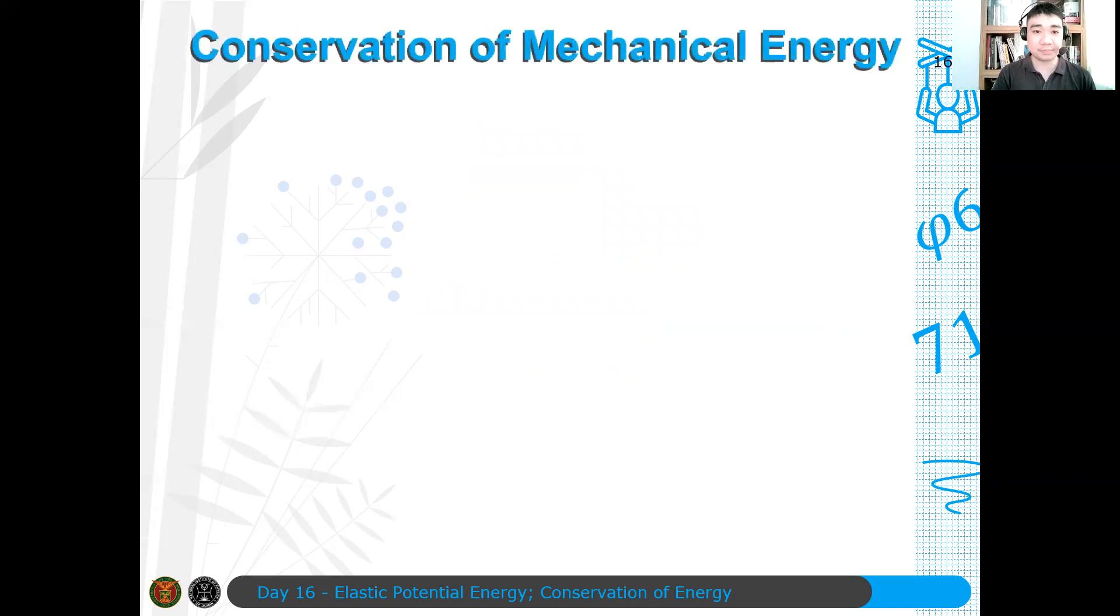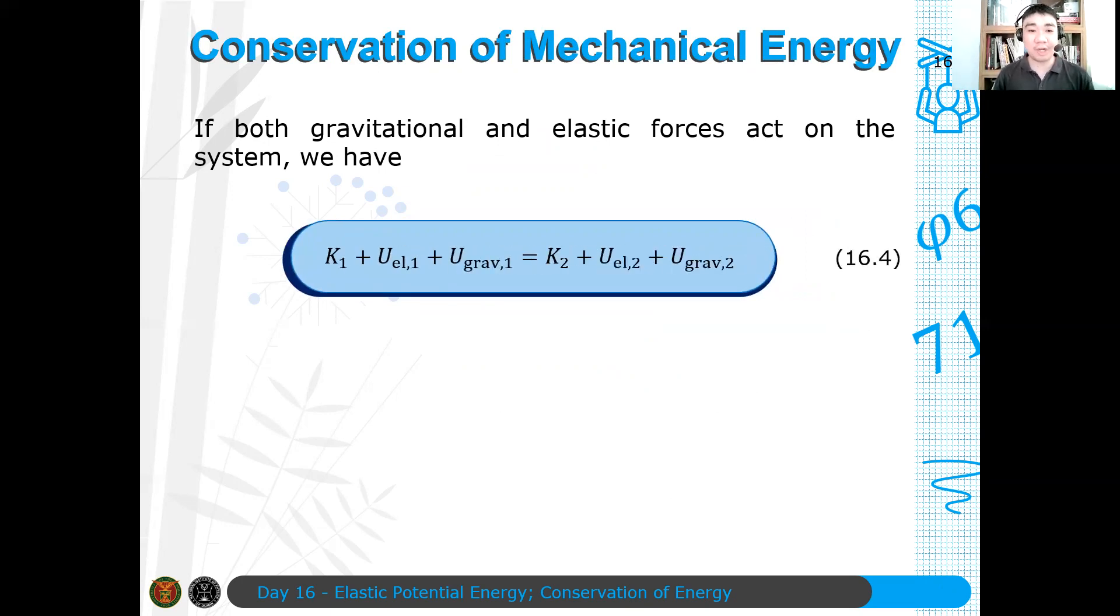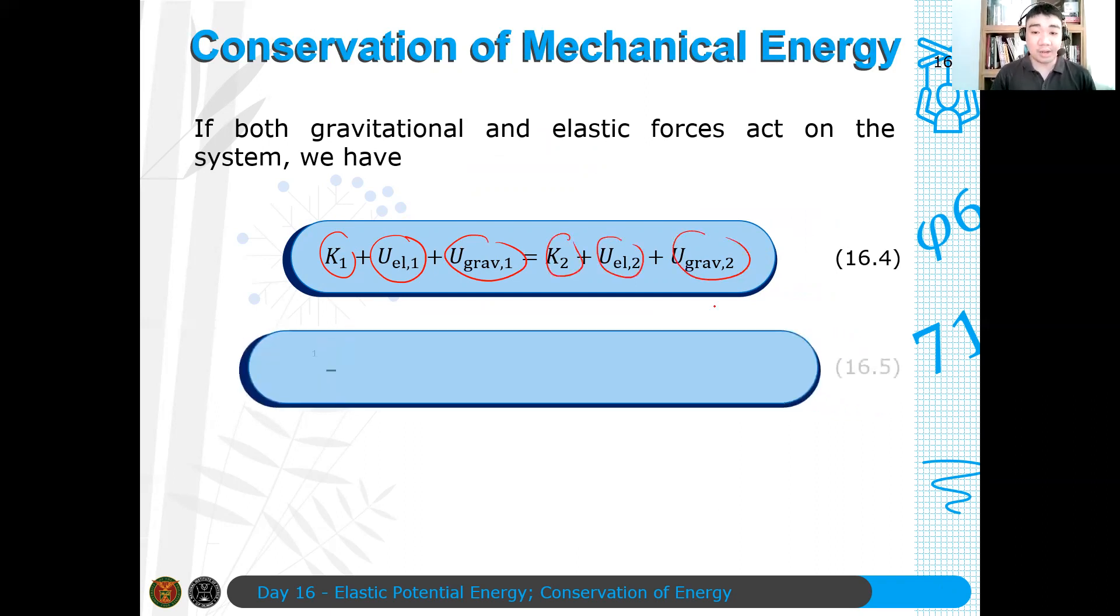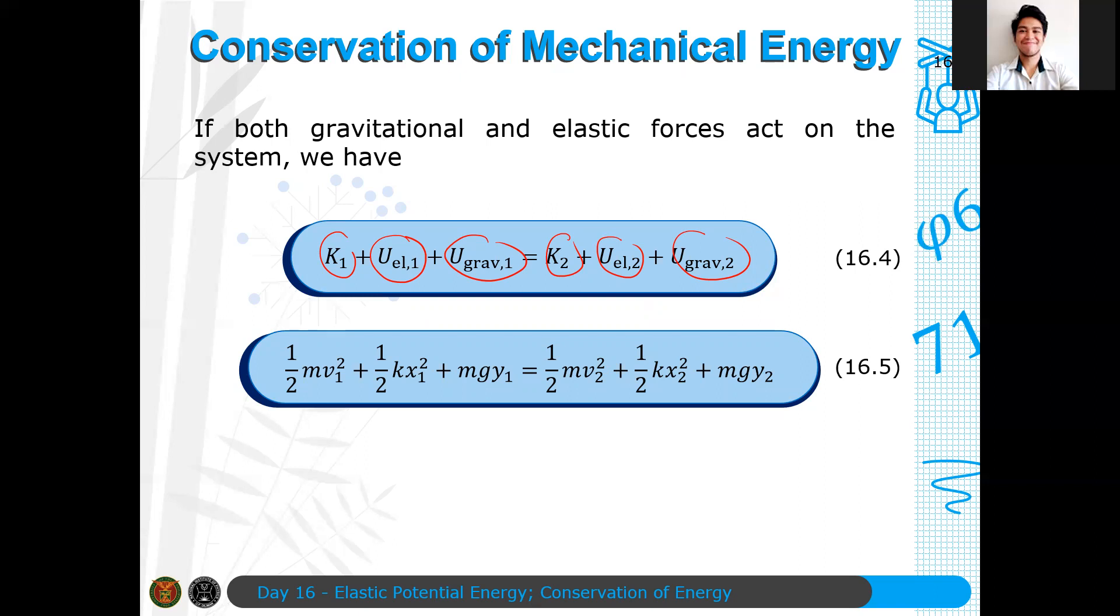If you have both gravitational and elastic forces, magkakaroon ng additional constraints. So, for example, if both gravitational and elastic forces act on the system, we have this relatively long expression. Magkakaroon ka ng initial kinetic energy, initial elastic potential energy, initial gravitational potential energy, you add that, equals to their final counterparts. And, in more explicit form, this looks like our expression. Of course, when you set up your system naman, usually may mga na-zero dyan, na-zero out. Usually ganon naman. So, ganyan yung magiging expression nyo for conservation of mechanical energy, given that there are gravitational and elastic forces acting on the system.